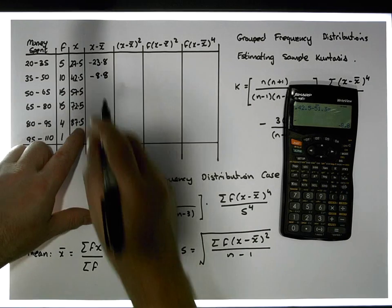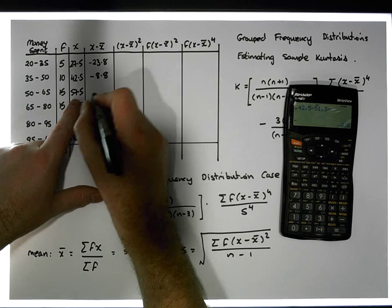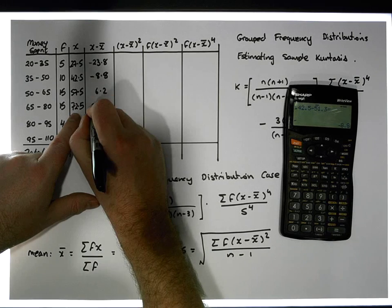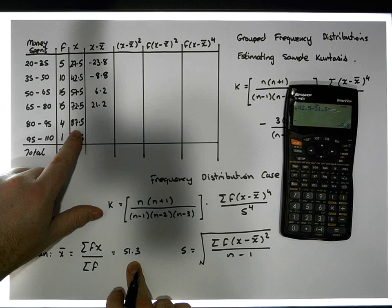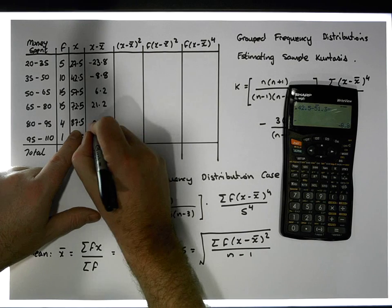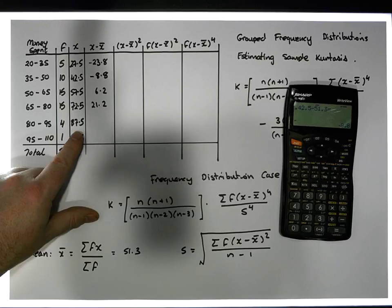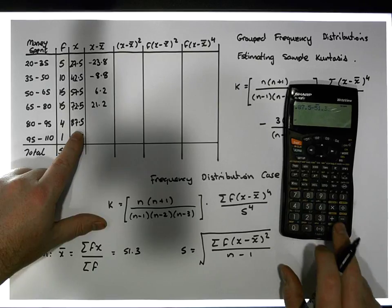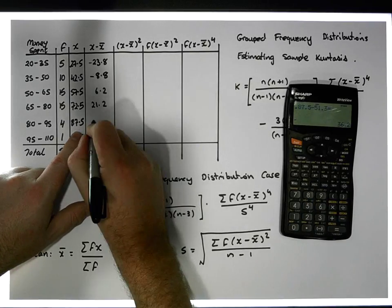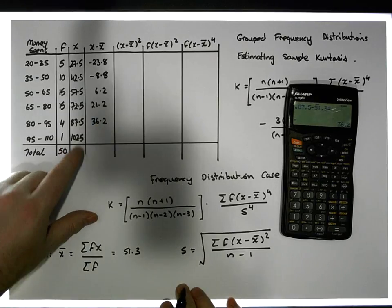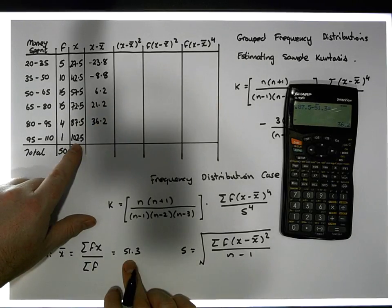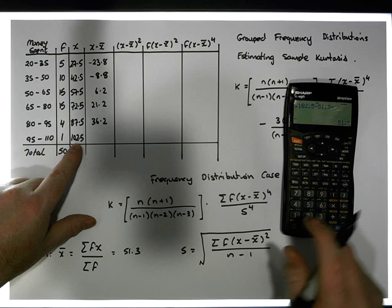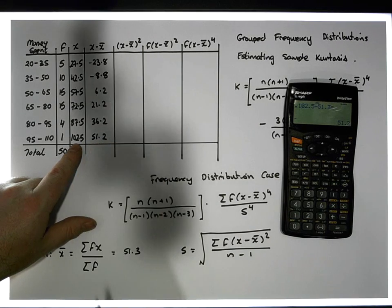We've done these calculations in our previous example. So this becomes 6.2. Then 72.5 minus 51.3 is 21.2. Then 87.5 minus 51.3 gives us 36.2 — so that's 36.2. And finally 102.5 minus 51.3 gives us a value of 51.2.